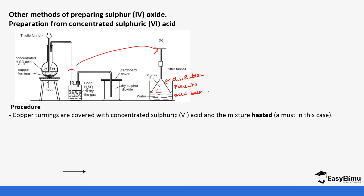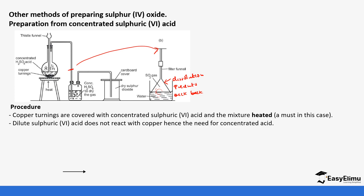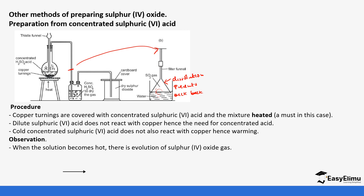The copper turnings are covered with concentrated sulfuric acid and the mixture is heated. Dilute sulfuric acid does not react with copper — a concentrated acid is needed. Cold concentrated sulfuric acid also does not react with copper, which is why heating is required. When the solution becomes hot, there is an evolution of sulfur dioxide. The equation is: copper plus concentrated sulfuric acid forms copper(II) sulfate, water, and sulfur dioxide.